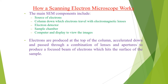The electron beam hits the surface of the sample, which is mounted on a stage in the chamber area. Unless the microscope is designed to operate at low vacuum, both the column and the chamber are evacuated by a combination of pumps. The level of vacuum will depend on the design of the microscope.